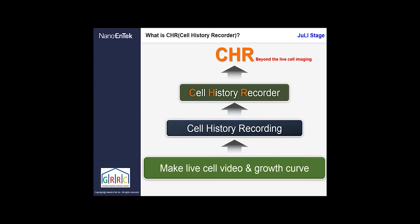To start with the CHR — CHR stands for Cell History Recorder. JULiStage is a live cell imaging system, but JULiStage can do more than just live cell imaging. Other values such as easy video editing and basic analysis are included with the JULiStage machine, where you can do confluence analysis easily. We want to put JULiStage into a new extended and higher category as a Cell History Recorder, which means JULiStage CHR can include live cell imaging and many functions and values for researchers.